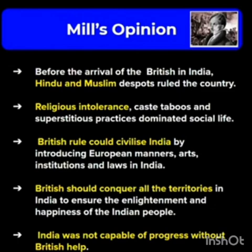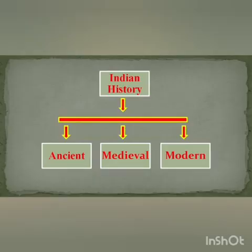British should conquer all the territories in India to ensure the enlightenment and happiness of the Indian people, and India was not capable of progress without British help — this was all conceded by James Mill. History is divided into three main periods: Ancient, Medieval, and Modern.